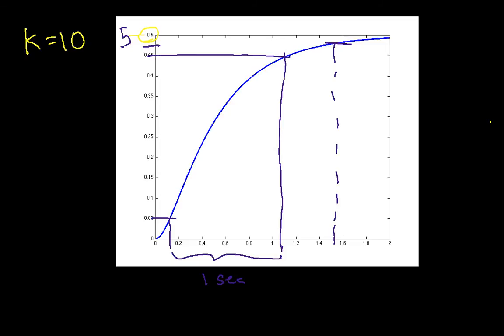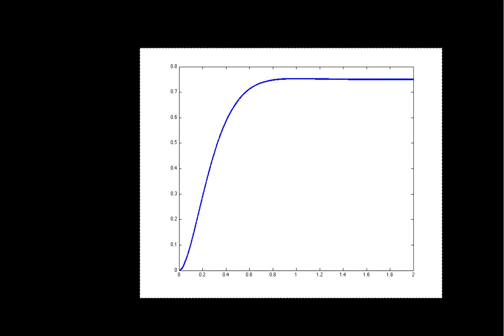So let's look then at what happens if I make k equal to 30. Here is the plot when k is equal to 30.